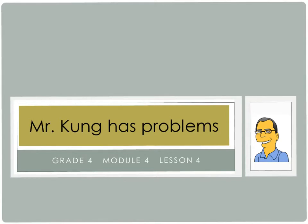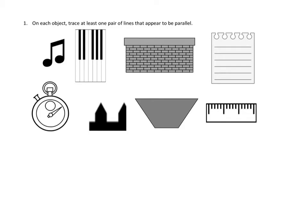Let's take a look at a couple of problems from tonight's homework and see if we can get going. Problem Number 1 starts off a lot like Problem Number 1 did yesterday. It asks us to read the directions here: On each object, trace at least one pair of lines that appear to be parallel. I'm going to skip over the piano keys and the note. I'll let you guys take care of those.